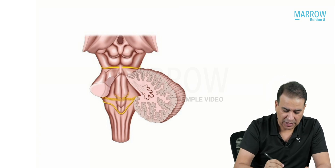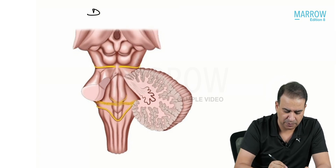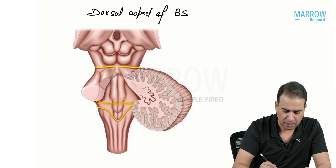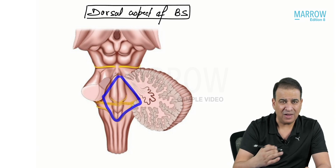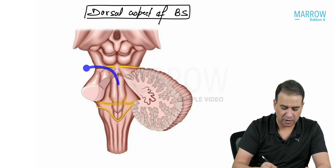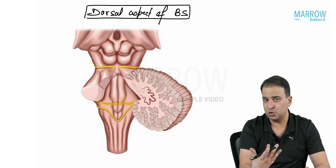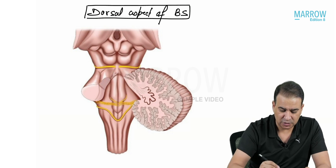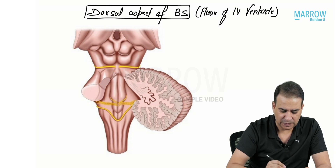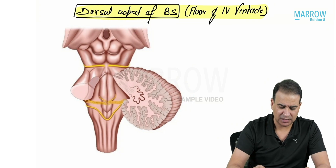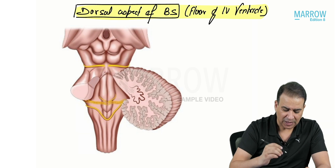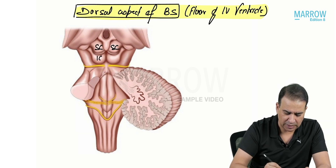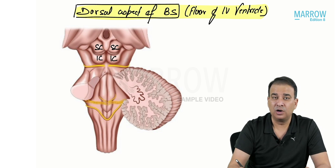Moving on to the dorsal aspect of the brainstem: looking at the picture of the dorsal aspect, the fourth ventricle is exposed because the cerebellum has been removed. So the dorsal aspect shows you the floor of the fourth ventricle, also called the rhomboid fossa — it's shaped like a rhombus. In the midbrain section you can see the superior colliculus and the inferior colliculus; the four colliculi together are called the corpora quadrigemina.